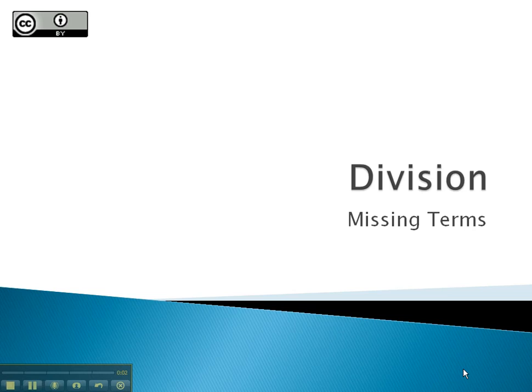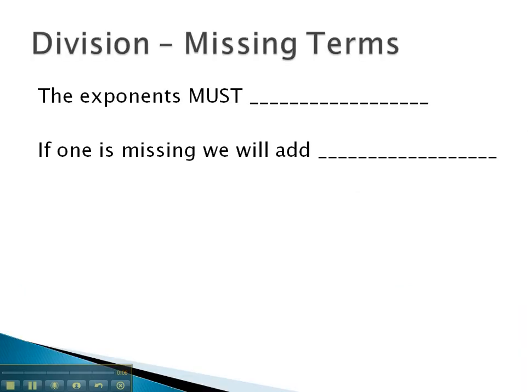In this video, we will look at doing long division when we have missing terms in the problem. As we consider our division problem, we must remember that the exponents must count down. As they do, if one is missing, we must add the missing term, whether it's a 0, 0x, 0x squared, or cubed, or so on.